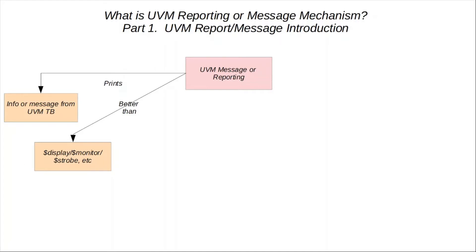It is hard to turn on or off specific instances of these debug messages. Also, the location of a particular display message is hard to find because we don't have a file or line number or details available. Typically, these $display and $strobe debug messages are under some macro tick defines, and a tick define would require a recompilation which is both time-consuming and inefficient.